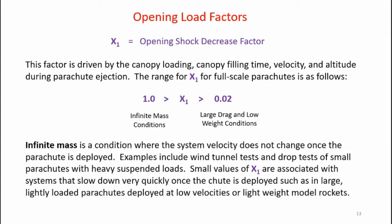Infinite mass is a condition where the system velocity does not change once a parachute is deployed — examples include wind tunnel tests and drop tests of small parachutes with heavy suspended loads. The data generated over the years is for full-scale parachute systems; unfortunately, it doesn't quite apply to model rocket parachutes. So what we're going to have to do is establish our own experiments to determine the critical variables that go into the opening load equation. I've developed a simple drop test apparatus to test parachutes and look at shock loads and shock attenuation. Let's go ahead and take a look at the apparatus.